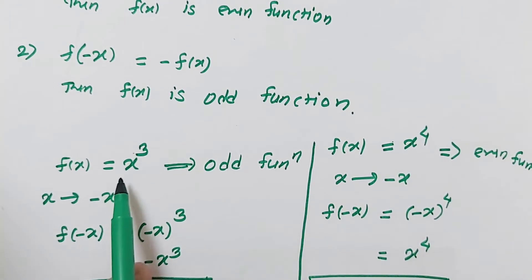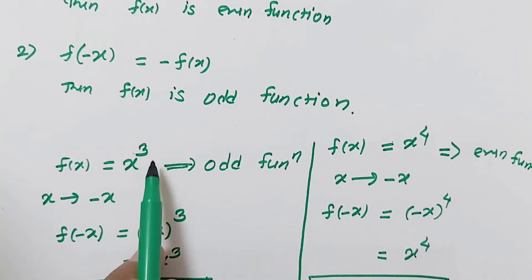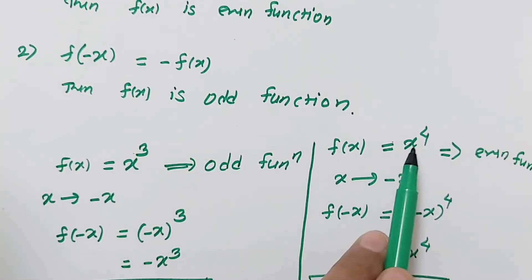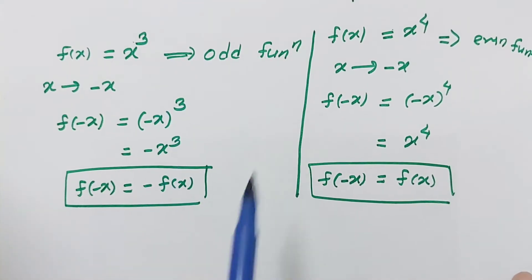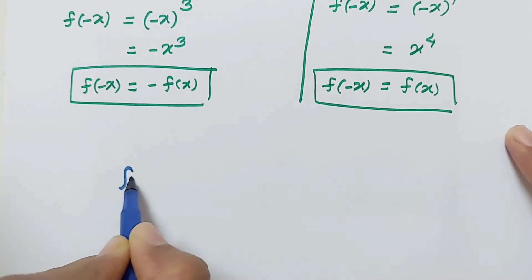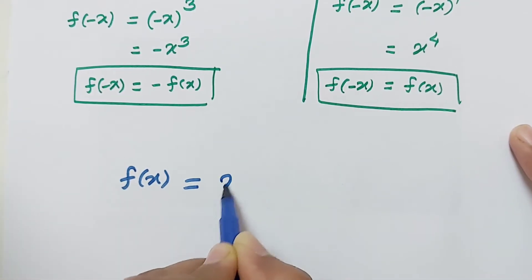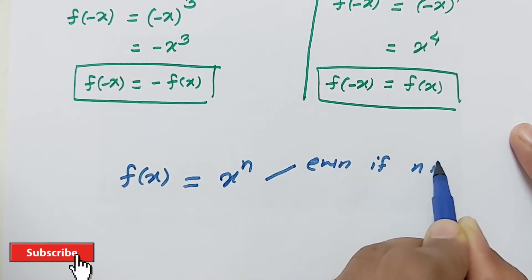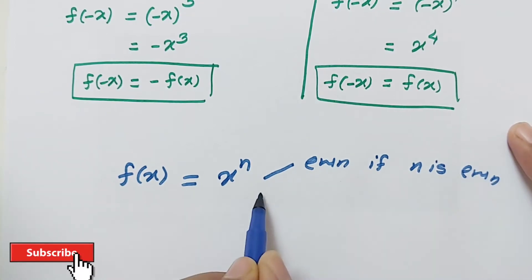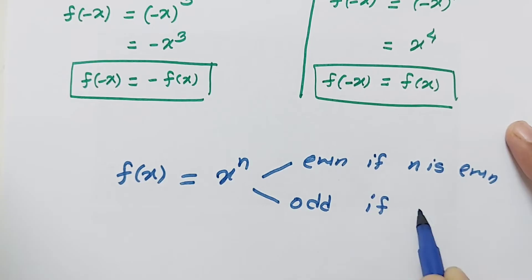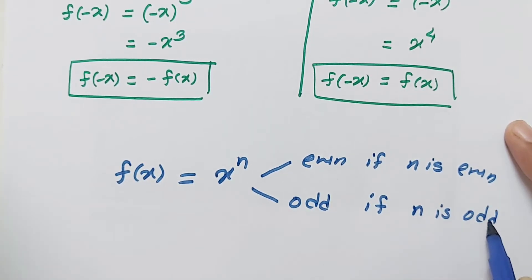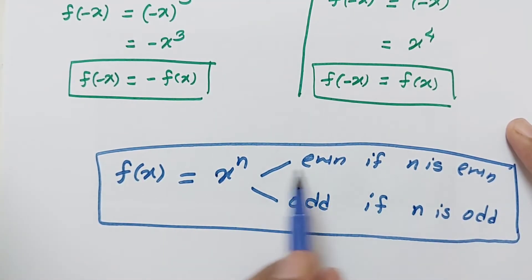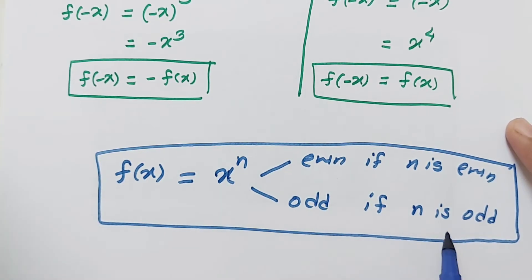Whenever we have a function containing x raised to an odd power, then it is an odd function. Whenever x is raised to an even power, then it is an even function. From these two examples we get the idea: f of x equals x raised to the power n is even if n is even, and odd if n is odd. So we just have to check the power of x — if the power is even, it is an even function; if the power is odd, it is an odd function.